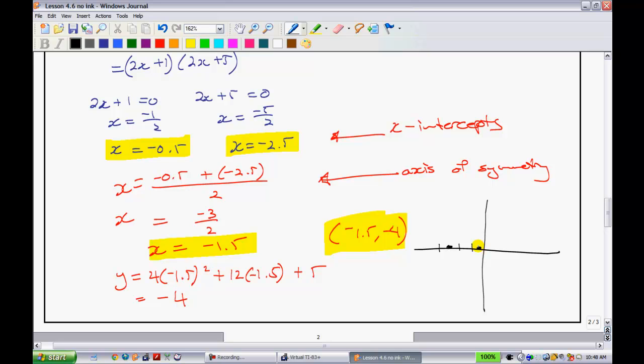There, so I've got those. I can put my vertex, my vertex I know is at 1.5 and down at negative 4, like so. And since I have all that, you have enough to give yourself a pretty good looking sketch.